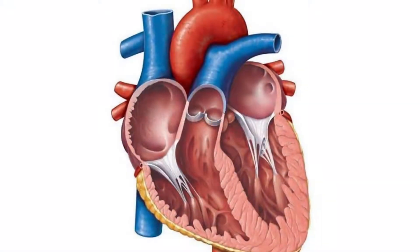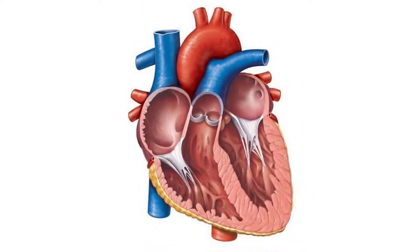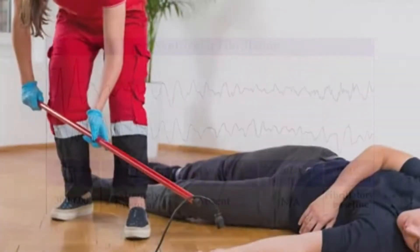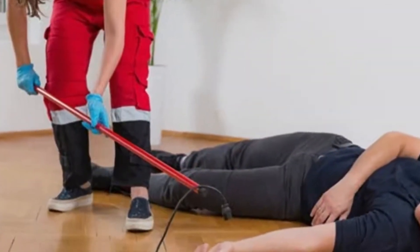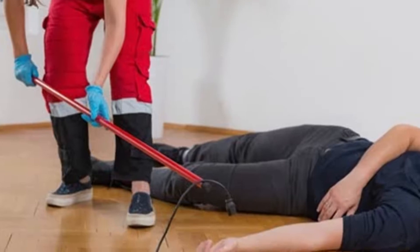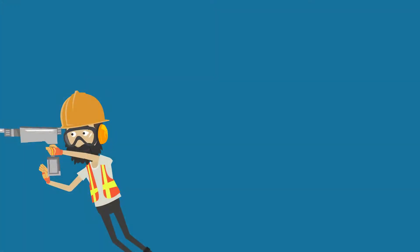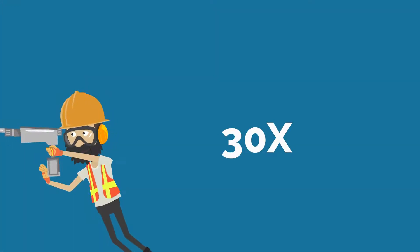Currents greater than 75 milliamperes can cause ventricular fibrillation, or rapid ineffective heartbeat. This can lead to death in minutes. To put this into perspective, a small power drill uses 30 times as much power.